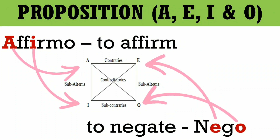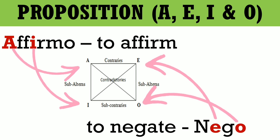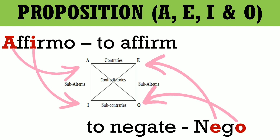Next, why is it that instead of A, B, C, D, the labels on the square are A, E, I, and O? First, A and I propositions come from the Latin word 'affirmo,' meaning to affirm — so they are affirmative propositions. E and O come from the Latin word 'nego,' meaning to deny or to negate. That is why A, E, I, and O are the labels on the square.